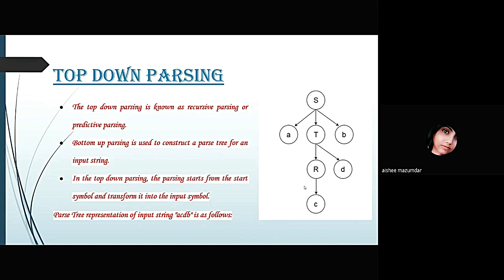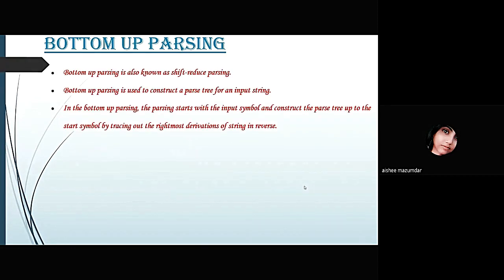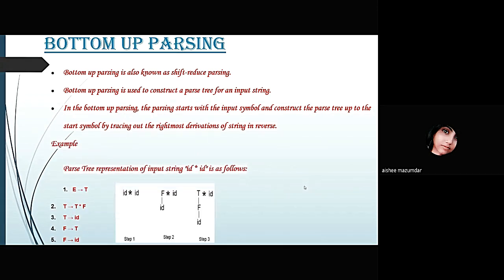Now I would like to go to the next slide which is about bottom-up Parsing. Bottom-up Parsing is also known as shift-reduce Parsing. It is used to construct a Parse tree for an input string. In bottom-up Parsing, the Parsing starts with the input symbol and constructs the Parse tree up to the start symbol by tracing out the rightmost derivations of a string in reverse. There is an example given of an input string id x id, with certain grammar rules in five different points and six steps to make the Parse tree by using the bottom-up Parsing rules.